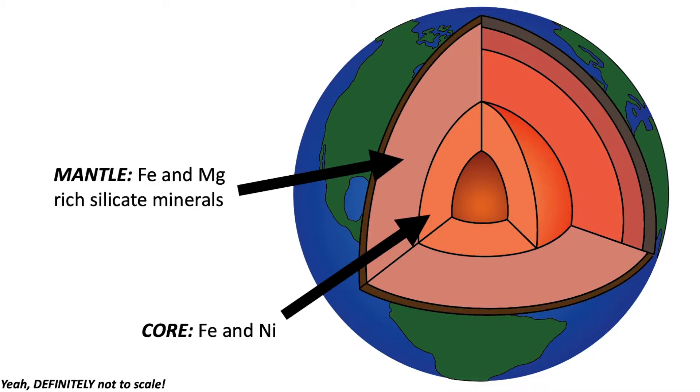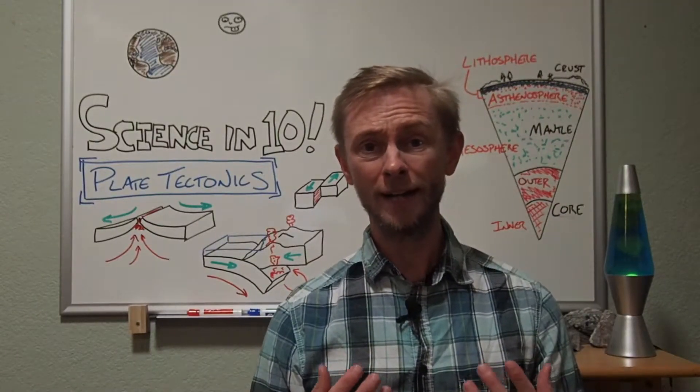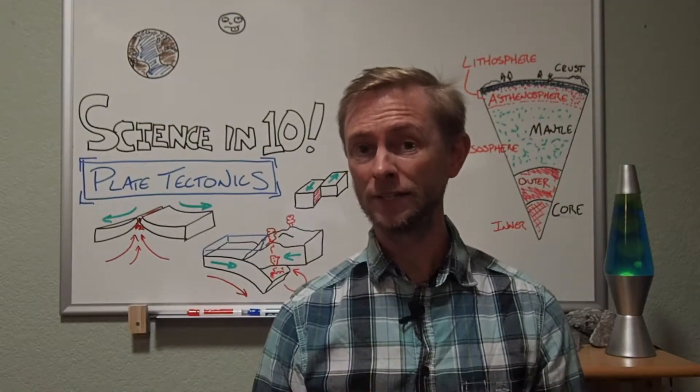Surrounding the core, we have the mantle. The mantle is the bulk of Earth's interior and it's composed of fairly high density iron and magnesium rich minerals.